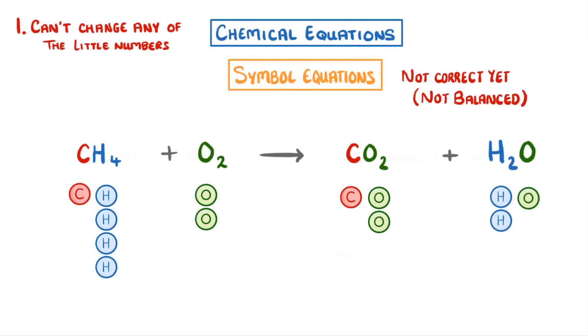Instead, we have to rely on changing the big numbers in front of the different elements or compounds, as this number just represents how many of that substance there are. So to increase the number of oxygen atoms on the left, we'd have to put a 2 in front of the O2, meaning we now have 2 oxygen molecules, and therefore 4 oxygen atoms in total on the left-hand side.